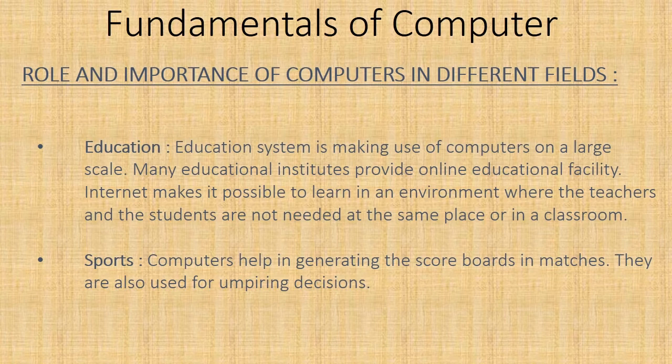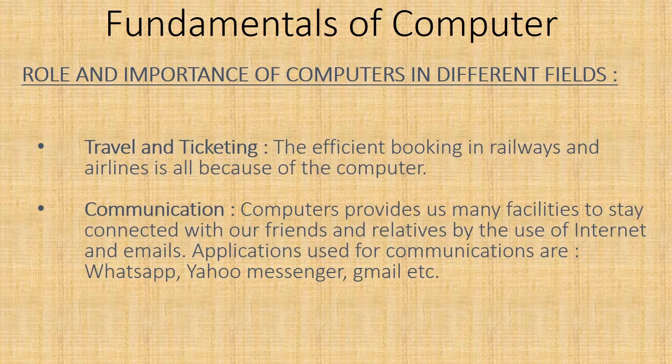Sports — computers help in generating scoreboards in matches and are also used for umpiring decisions. Travel and ticketing — efficient booking in railways and airlines is all because of computers. This is the reason you can book a train from point A to point B, and the time taken for reservation is also very less.